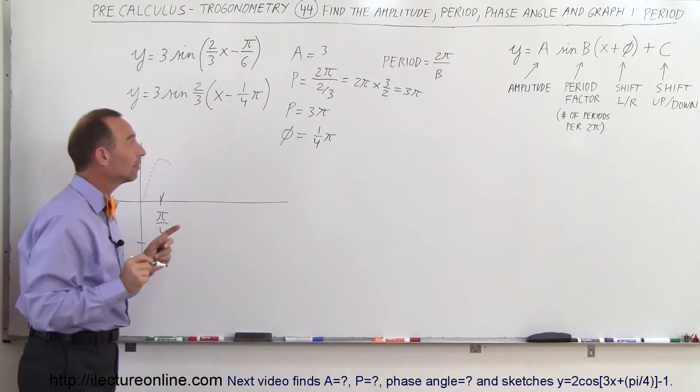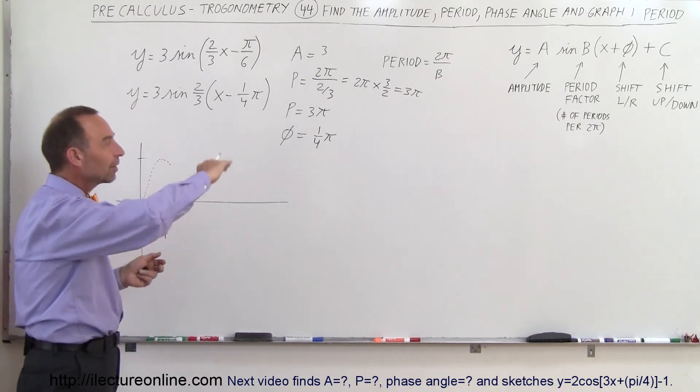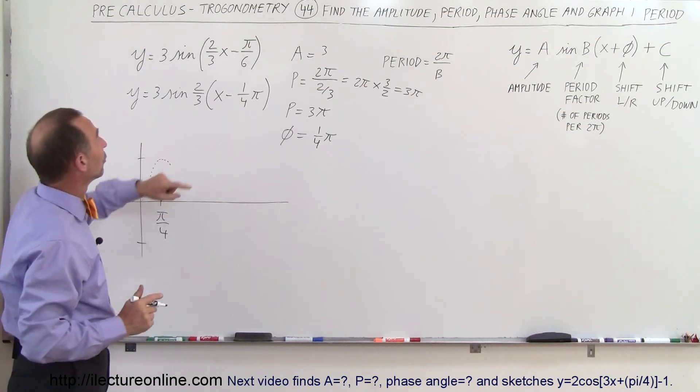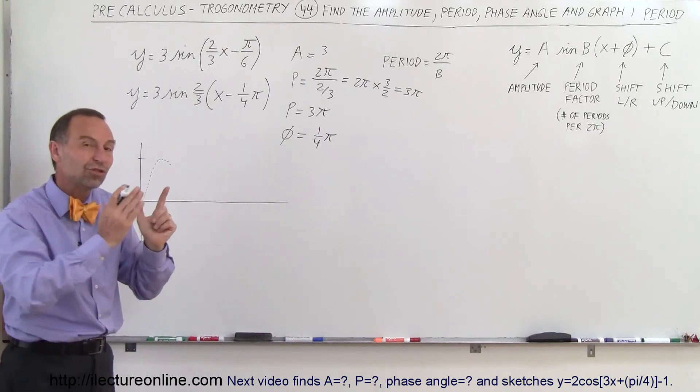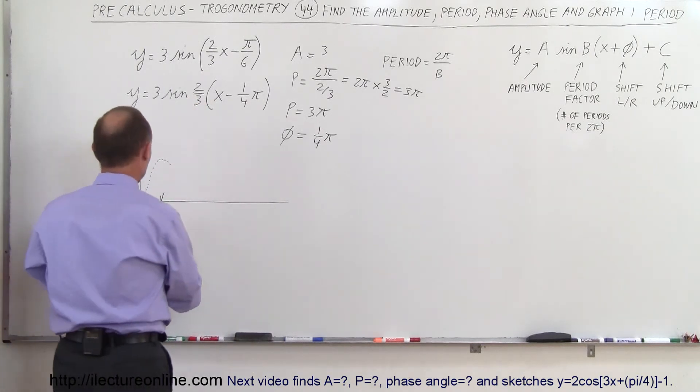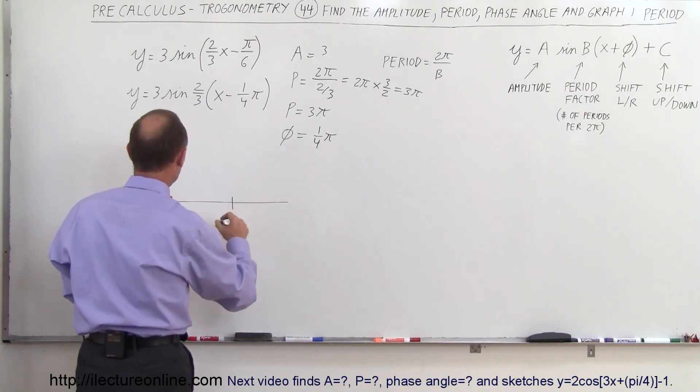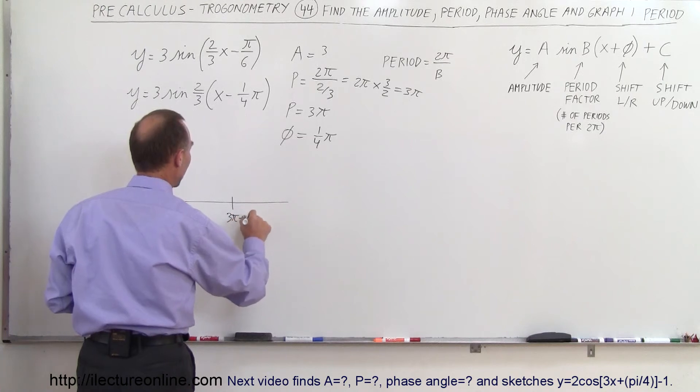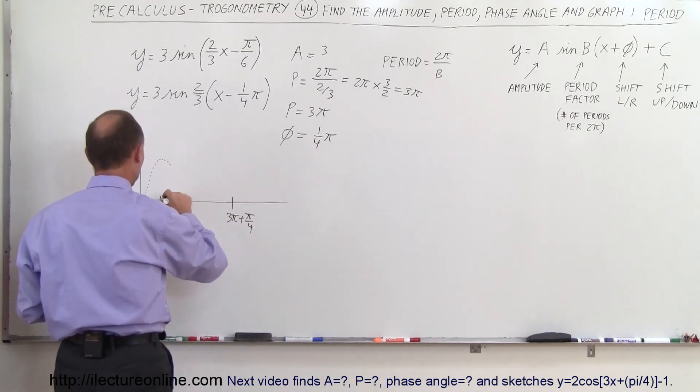Now, the period is 3π. That means one complete cycle of the function, one complete period of the function, will take 3π instead of 2π. You notice that this number in front of the x is smaller than one. That means it will stretch out the function. So instead of going from π over four to 2π plus π over four, it will now be 3π plus π over four. And that will now be one complete period of the function.